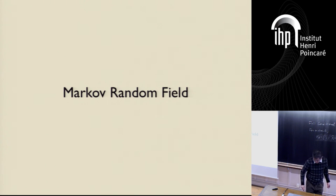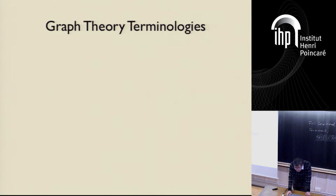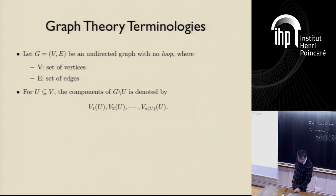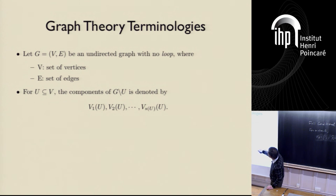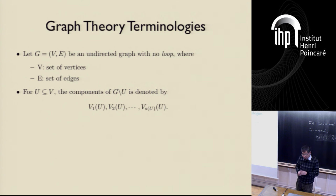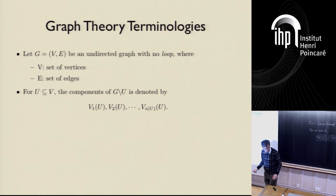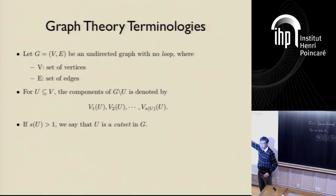We are going to talk about Markov random fields in this framework. Some graph theory terminology: let G = (V, E) be an undirected graph with no loops, where V is the set of vertices and E is the set of edges. Let U be a subset of nodes. G slash U denotes the graph obtained by removing the nodes U and all edges attached to U. The components of G slash U are denoted V1(U), V2(U), ..., Vs(U)(U). If s(U) is greater than one, we say that U is a cut set in G.